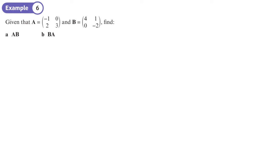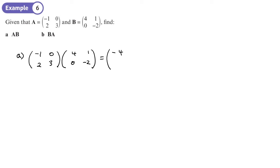We can do A times B and B times A when they're both square matrices, so that's not a problem. A is: negative 1, 0, 2, 3, and B is: 4, 1, 0, negative 2. We're going to check if A times B equals B times A. First element: negative 1 times 4 plus 0 times 0 = negative 4. Second element: negative 1 times 1 = negative 1, plus 0 times negative 2 = negative 1. Bottom row: 2 times 4 plus 3 times 0 = 8; last element: 2 times 1 plus 3 times negative 2 = 2 minus 6 = negative 4.